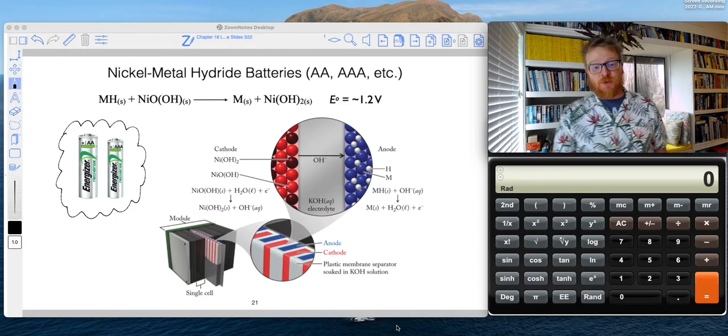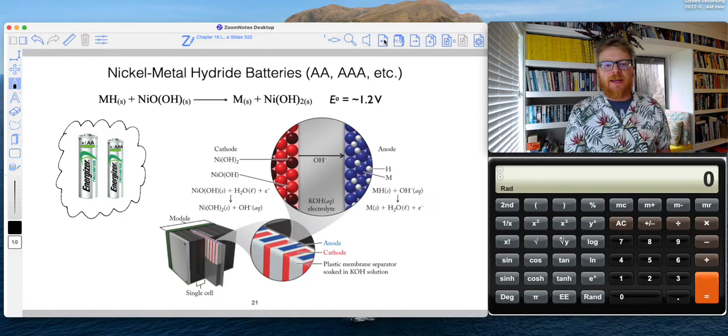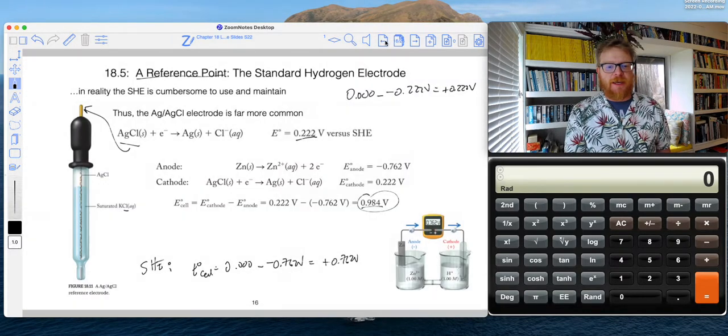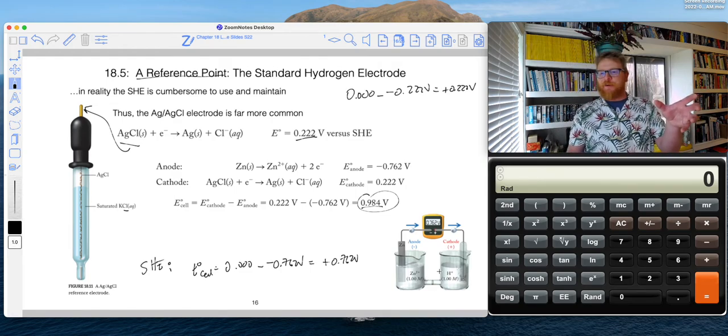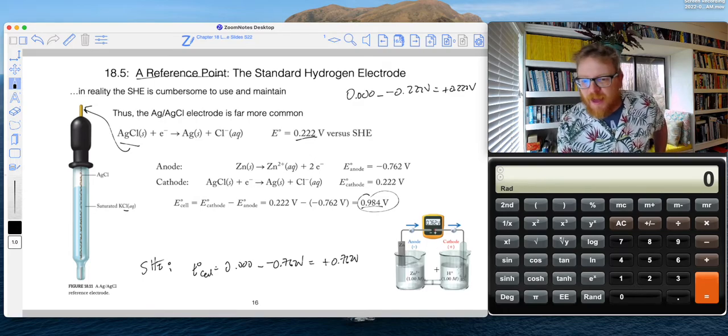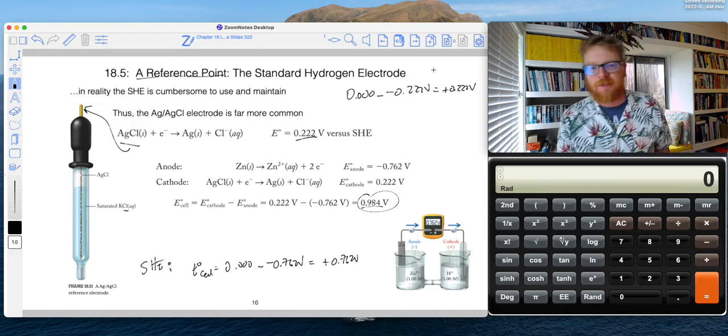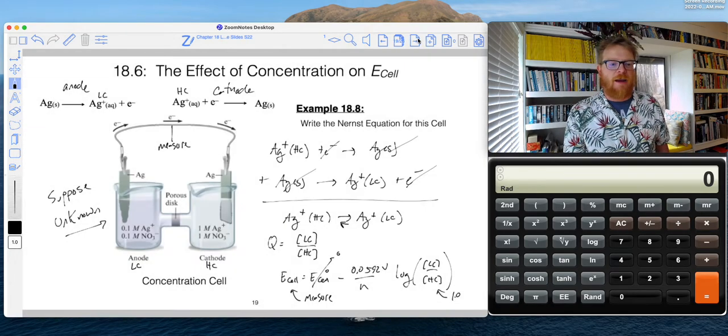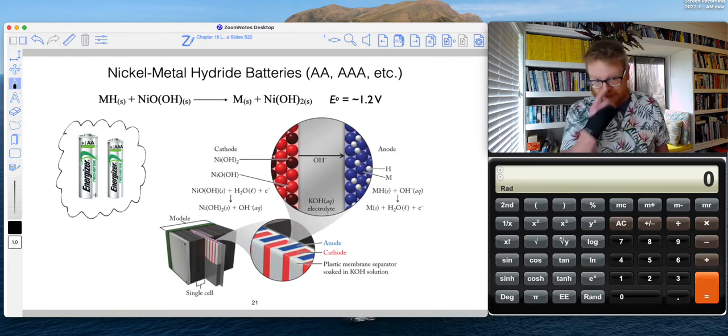Nickel metal hydride batteries. So these things are actually quite sophisticated. We've been talking about these rather clunky looking voltaic cells, things that look like a beaker of liquid on one side and another beaker. Like how the heck are you going to cram that thing into your remote control? You're not. So there's been a lot of engineering to create these things.